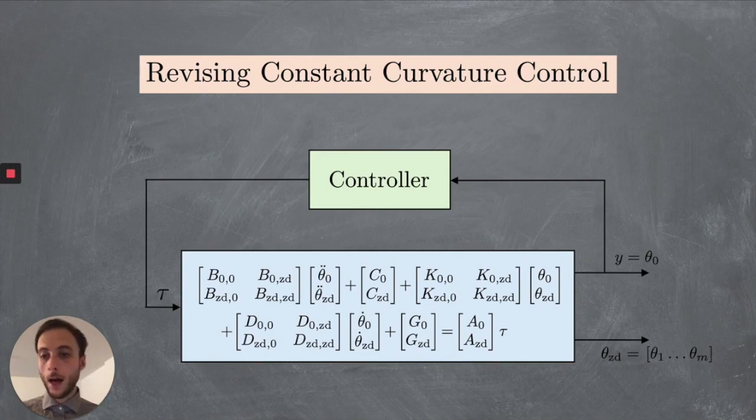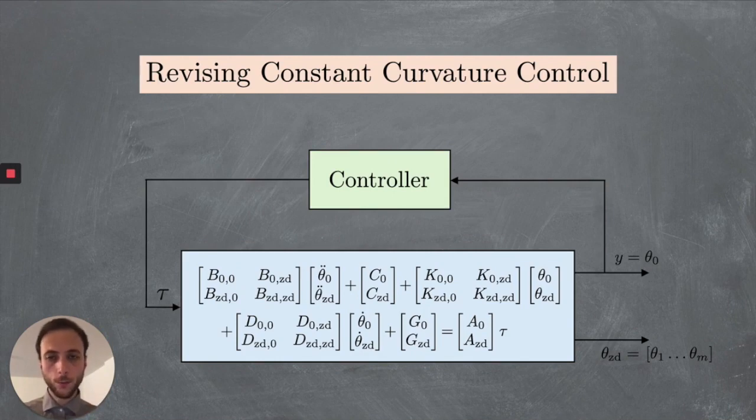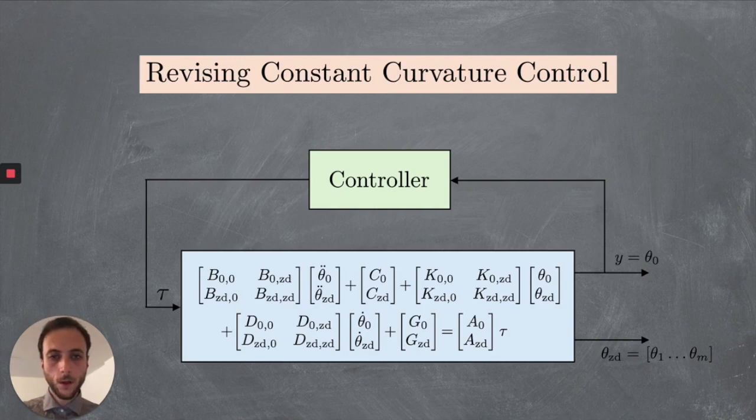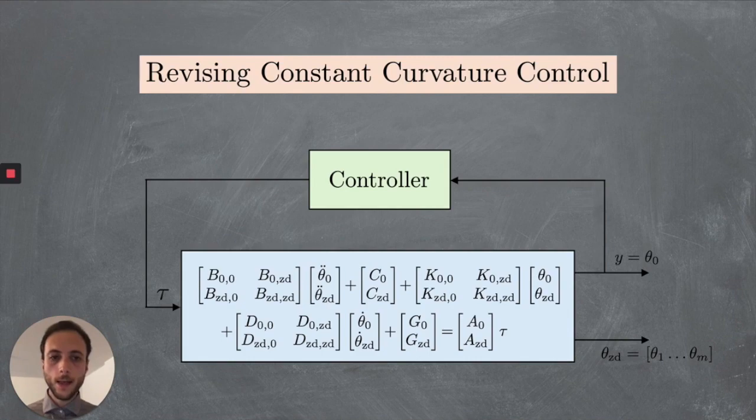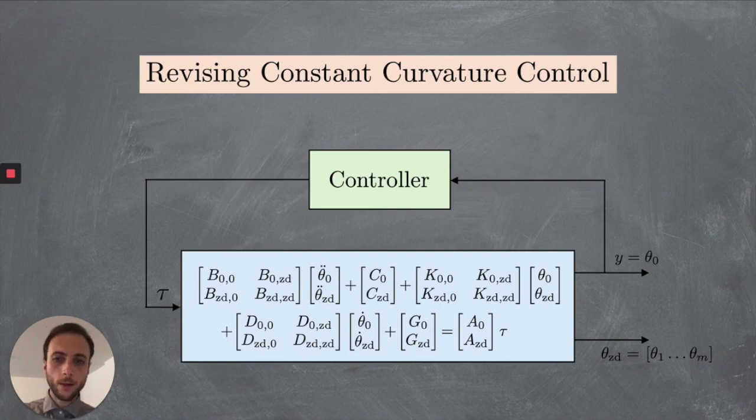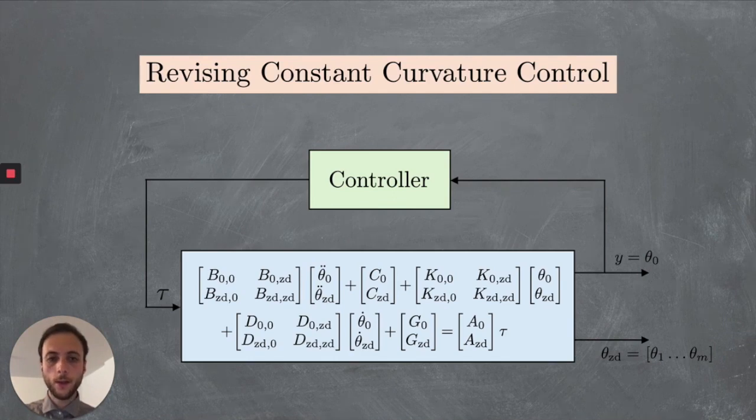We can now see quite naturally that a constant curvature-based feedback controller just takes this part of the output and closes the loop into the input. It's now interesting to use this framework to study how theta ZZD, which is the configuration of the zero dynamics of this dynamical system, is influenced by this loop closure. And we do that in the paper.